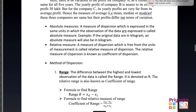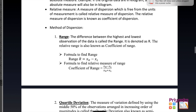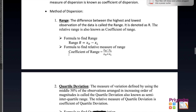In this chapter we are going to learn four methods of dispersion. The first is range: the difference between the highest and the lowest observation of the data is called range, denoted as R. The relative range is also known as the coefficient of range. You can see the formula to find out the range and coefficient of range.